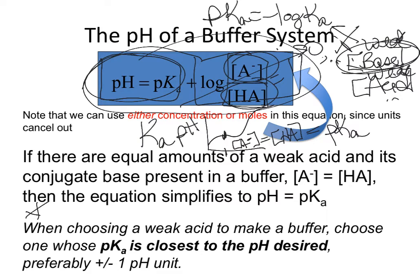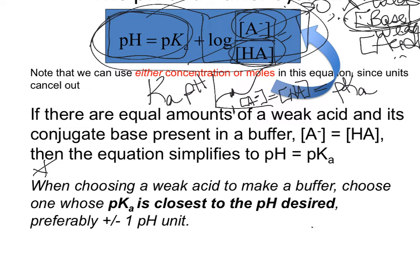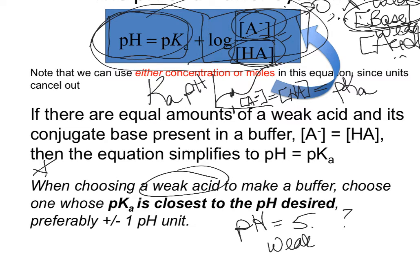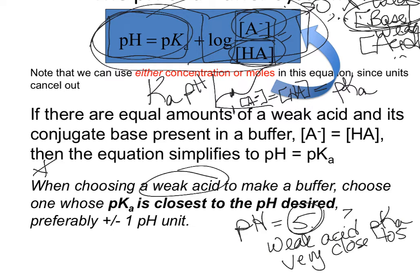There's often a multiple choice question asking you to select a weak acid/conjugate base system to match a desired pH. For example, if you want a buffer system that maintains a pH of 5, look for a weak acid that has a pKa as close as possible to 5. The weak acid with the pKa closest to the desired pH is the one you want to pick.